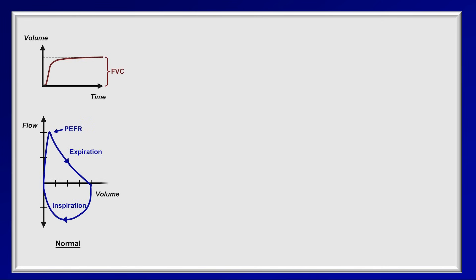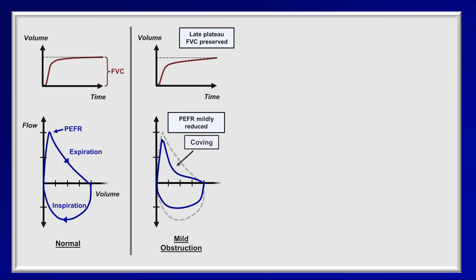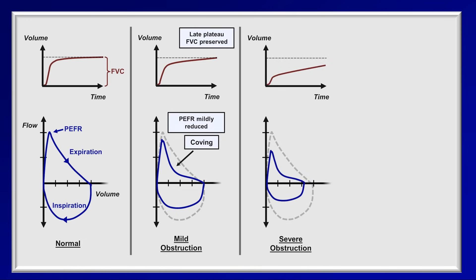There are six typical flow-volume loop patterns beyond normal. In mild obstruction, the FVC is preserved but it takes longer to achieve — shown as a late plateau in the volume-time graph. In the flow-volume loop, the peak expiratory flow rate may be mildly reduced, and there is deformation in the middle of the expiratory limb, called coving — analogous to a reduced FEF25-75%. In severe obstruction, a reduction in FVC is visible in both curves; peak flow is severely reduced and coving may be even more pronounced.